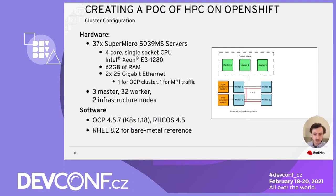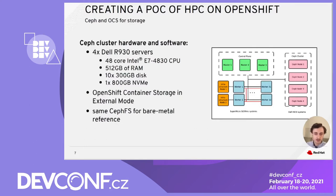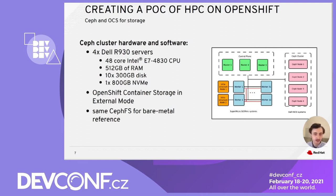The cluster was running OpenShift Container Platform version 4.5.7 based on Kubernetes 1.18. For bare-metal comparisons, we used RHEL 8.2. For this POC, we used CephFS and OpenShift Container Storage for a shared file system. OpenShift Container Storage, or OCS, is software-defined storage integrated with and optimized for OpenShift Container Platform. It is built on Red Hat Ceph storage and can be deployed on-premise or in the public cloud. In our tests, we ran OCS in external mode so that we could use the same Ceph cluster for both bare-metal and OpenShift results, and OCS can also run directly on an OpenShift cluster.